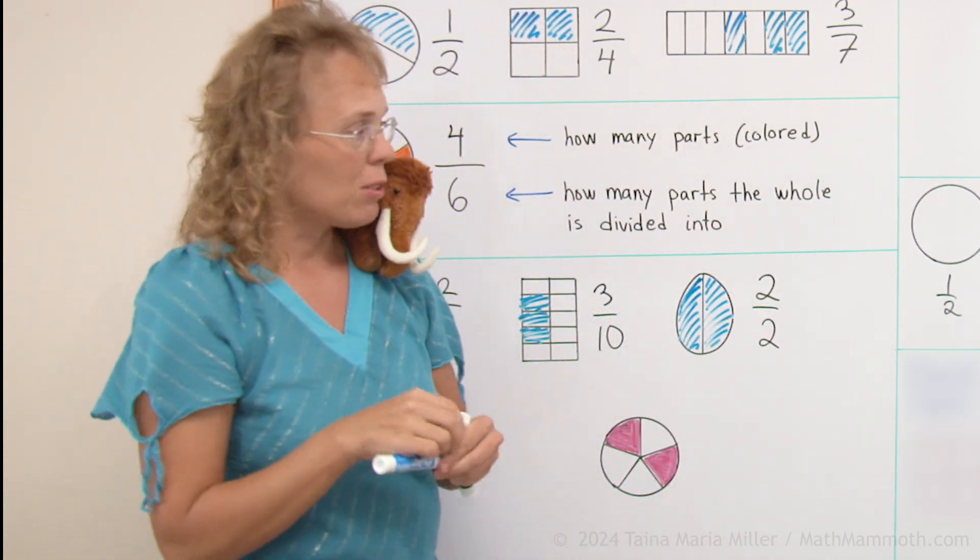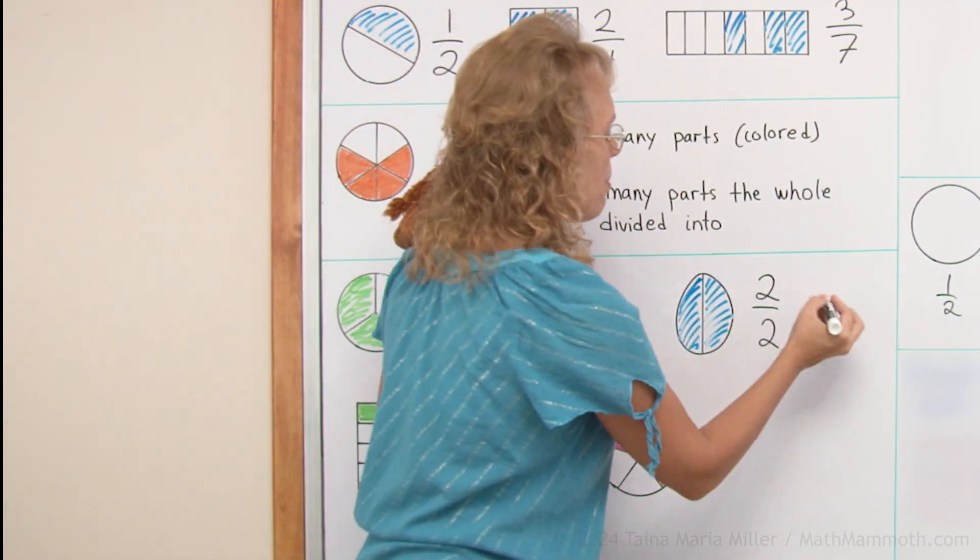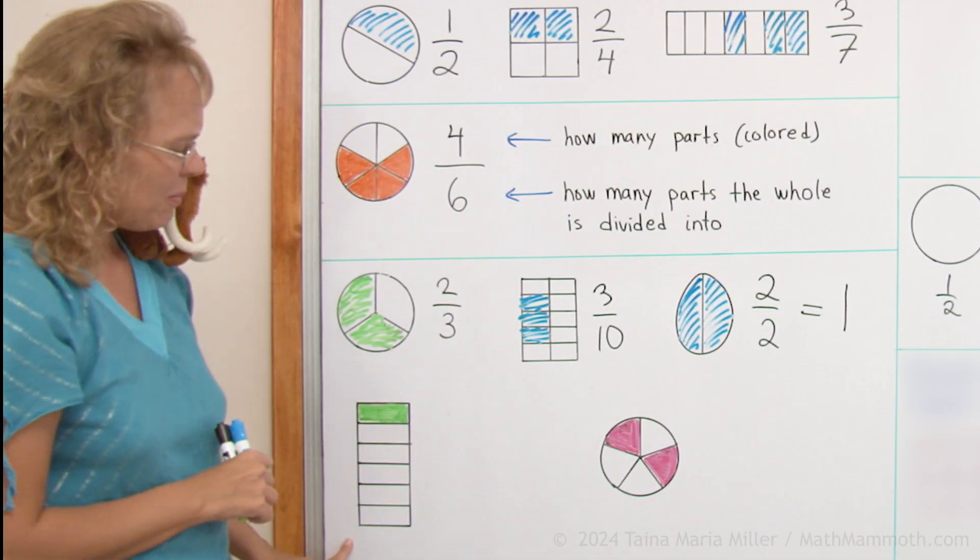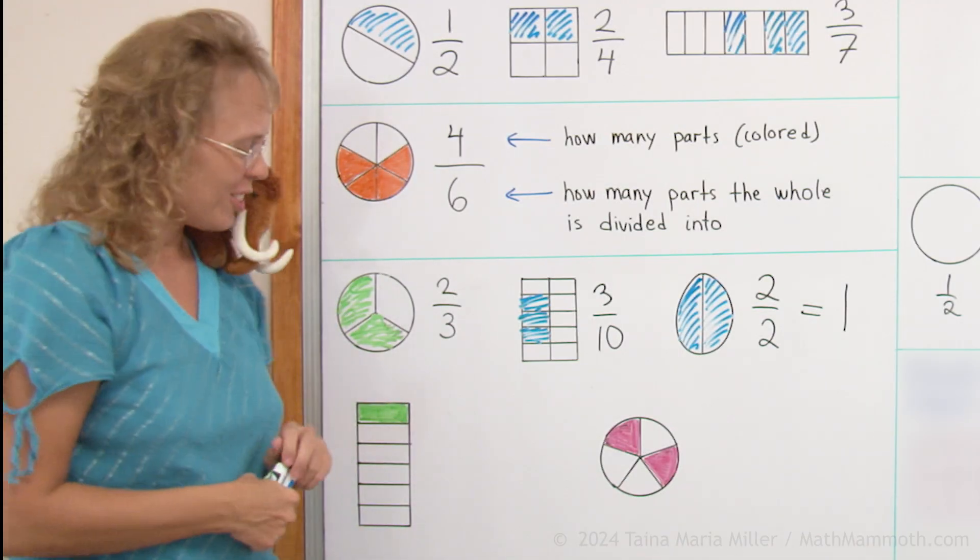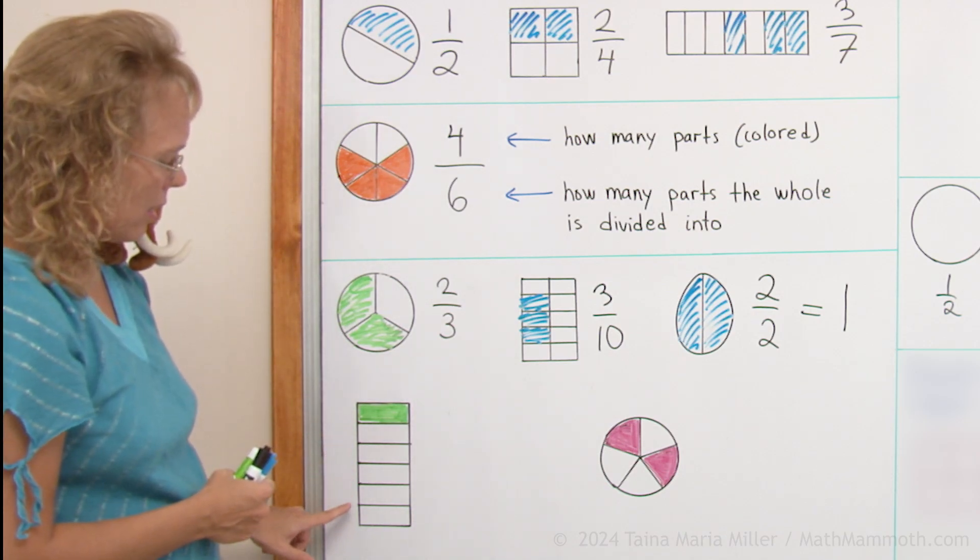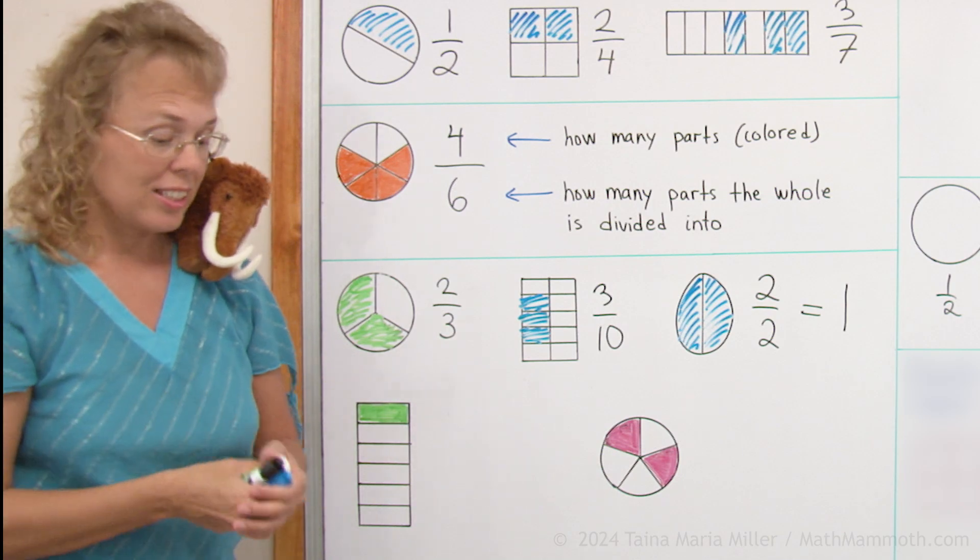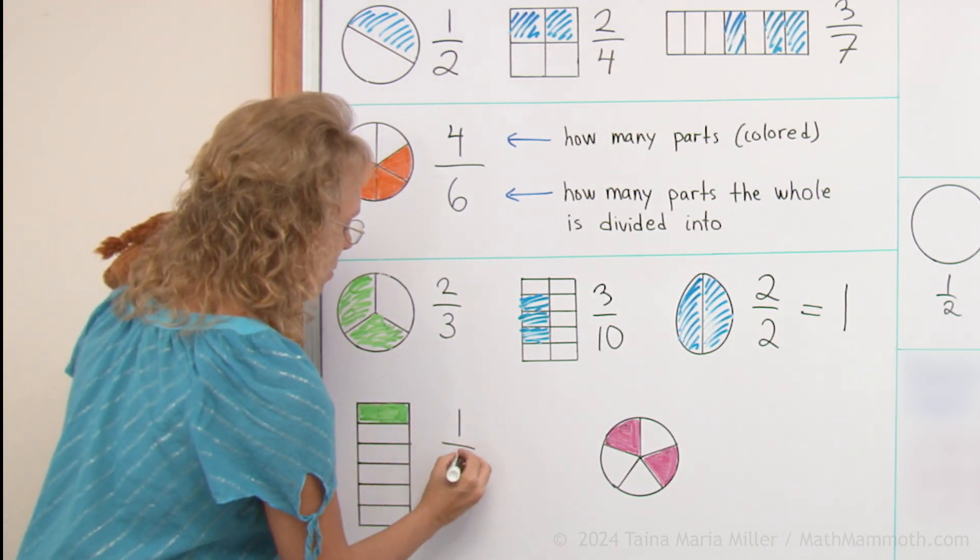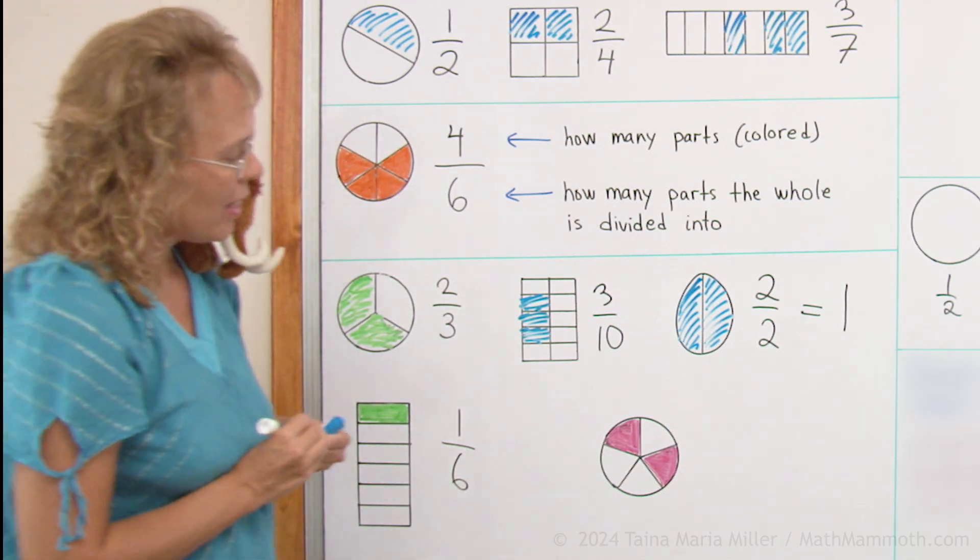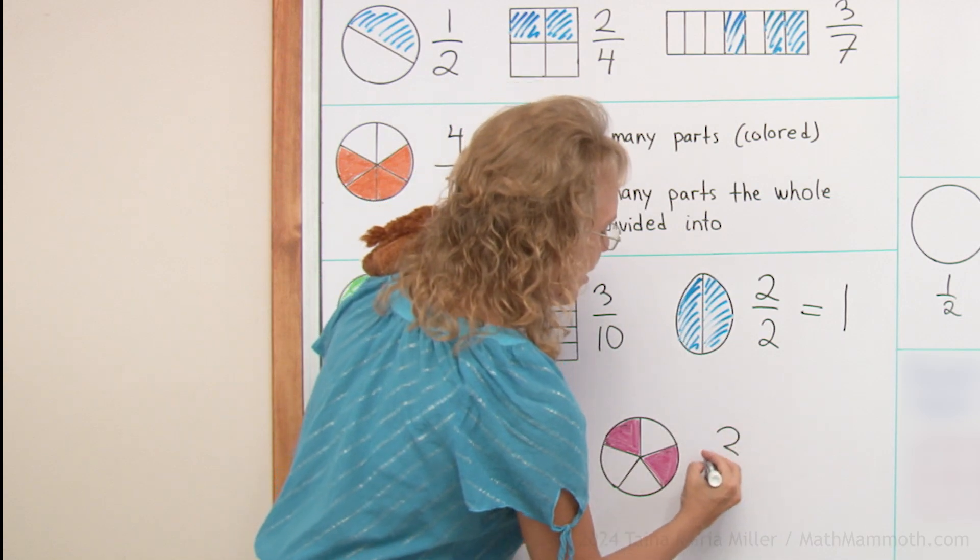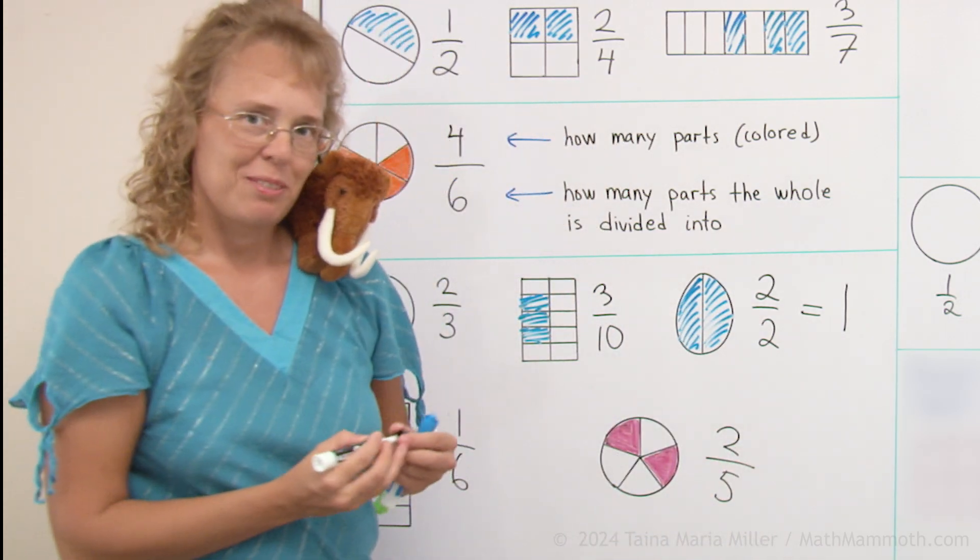In fact, this is equal to, this is the same as one whole. Now, our task is to name these two fractions. Can you name this fraction? There are six parts, six equal parts. One colored. Two colored. So, one sixth. And here, two colored, five in total, two fifths.